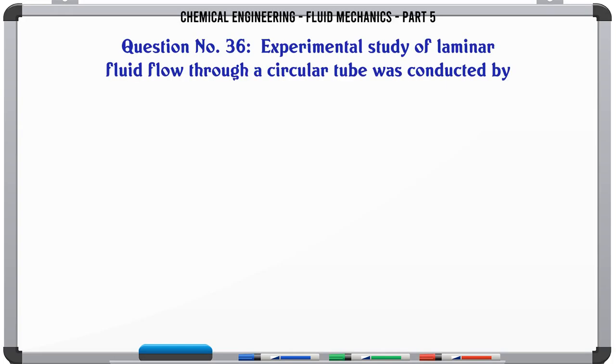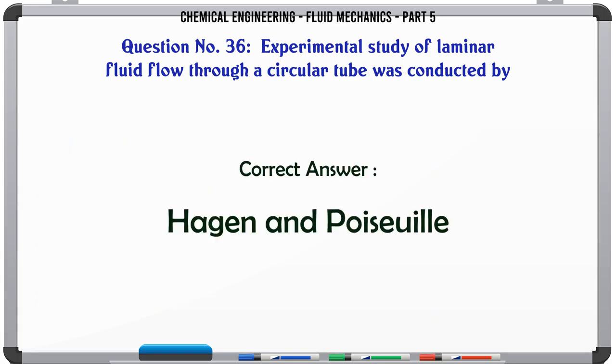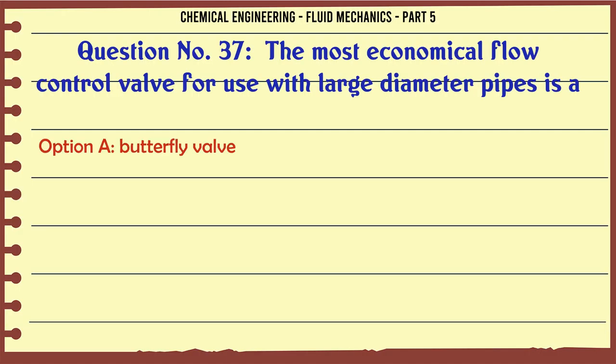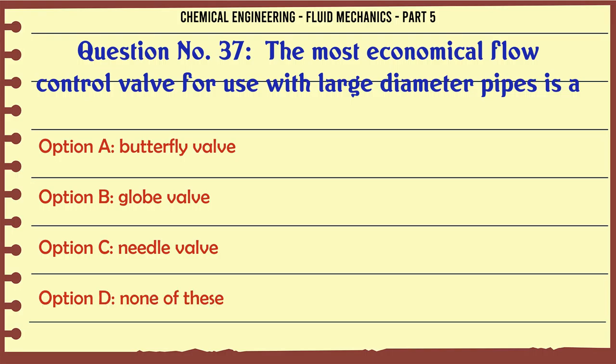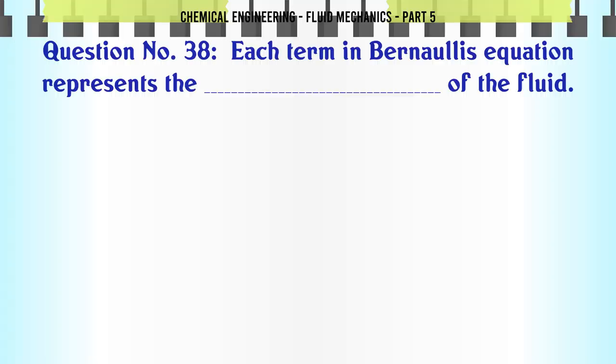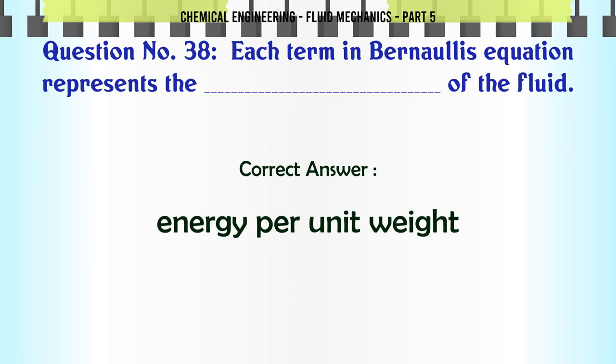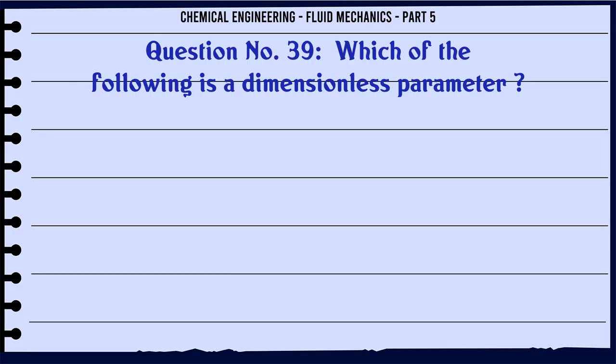Experimental study of laminar fluid flow through a circular tube was conducted by: a) Reynolds, b) Hagen and Poiseuille, c) Pascal, d) Blake Plummer. The correct answer is Hagen and Poiseuille. The most economical flow control valve for use with large diameter pipes is a: a) butterfly valve, b) globe valve, c) needle valve, d) none of these. The correct answer is butterfly valve. Each term in Bernoulli's equation represents energy of the fluid: a) per unit mass, b) per unit weight, c) force per unit mass, d) none of these. The correct answer is energy per unit weight.